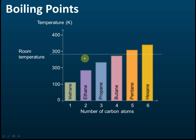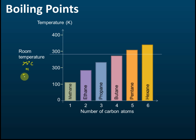Another thing you need to know is the state of matter of alkanes at room temperature. Room temperature is about 25 degrees Celsius, which is equivalent to 297 Kelvin. On the chart, 297 Kelvin is marked here.